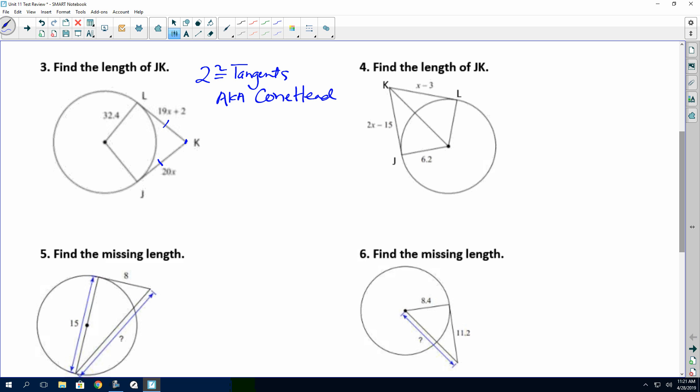So if you see that it makes a conehead, the parts in that conehead are going to be congruent. So to set this up, we should have 19x plus 2 equals 20x. And we're just solving for x first. So I can do that by just subtracting the 19x, which gives me 2 equals x. But they want us to find the length of JK. So now you have to plug it in.